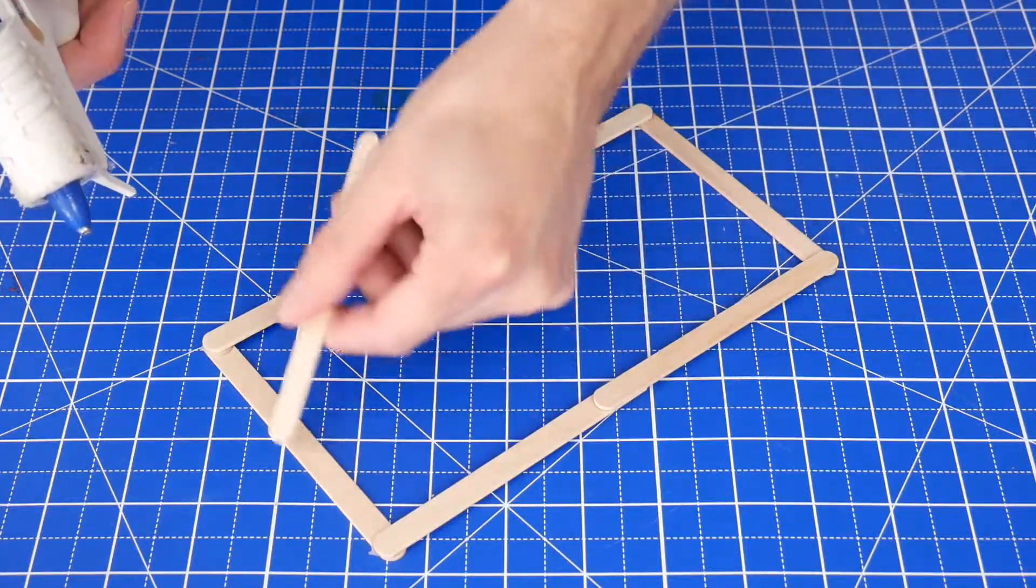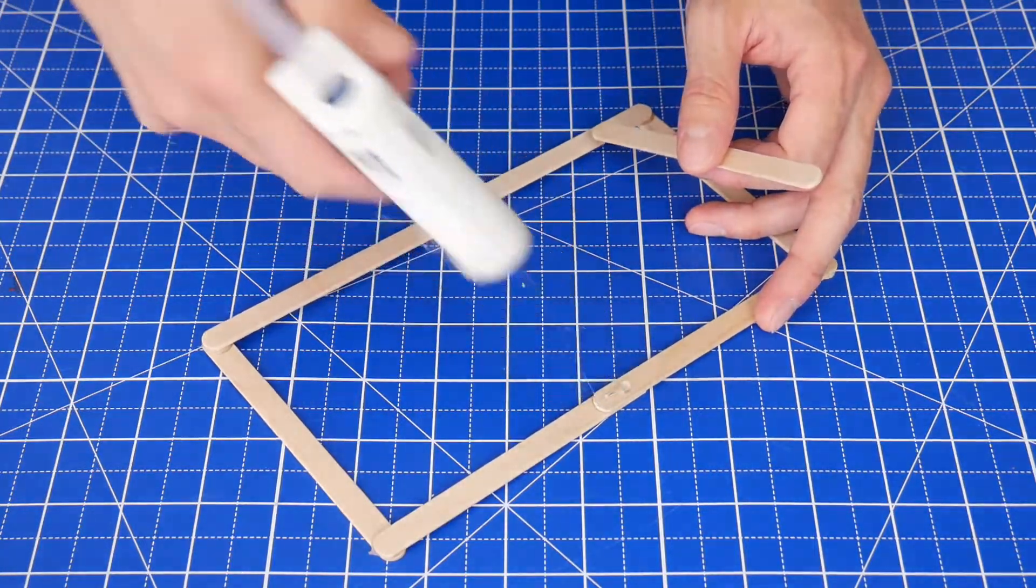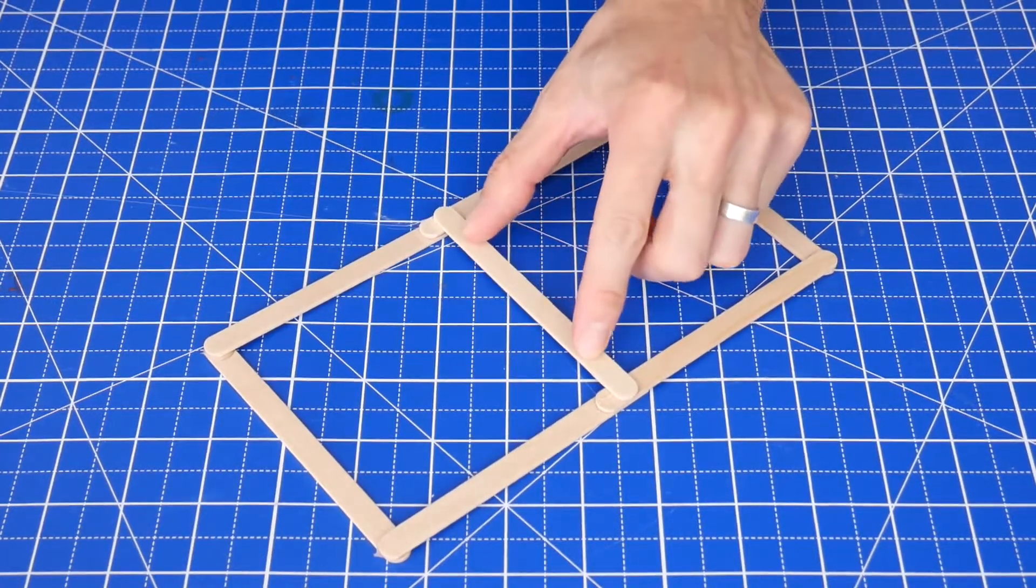The first step is to build a rectangular frame out of craft sticks and then glue one more craft stick in the middle right here for some added strength.